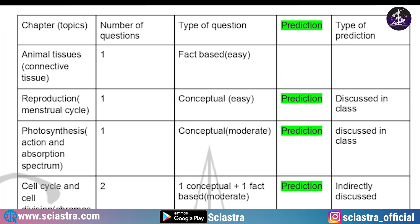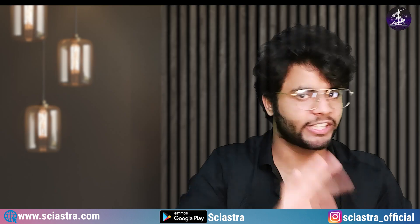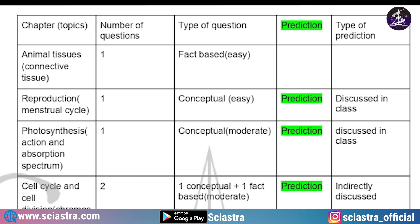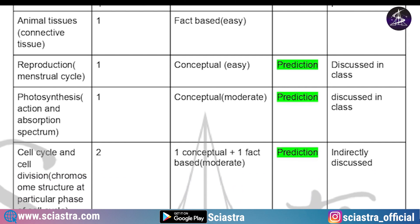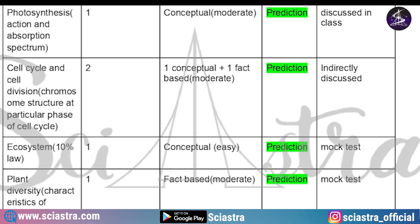As you can see in the document here, one question came from animal tissues — specifically from the topic of connective tissue. It was a fact-based and easy question that we did not predict. The second question was from reproduction, specifically the menstrual cycle — a conceptual and easy question already predicted and discussed in class. Then a question came from photosynthesis on the topic of action and absorption spectrum — a conceptual moderate-level question that was already predicted and discussed in class.